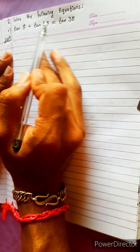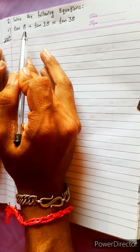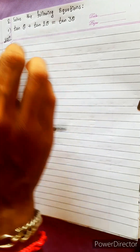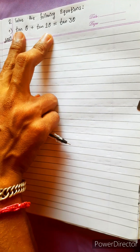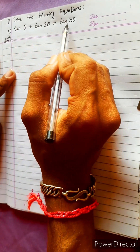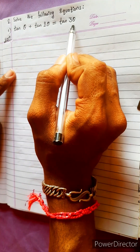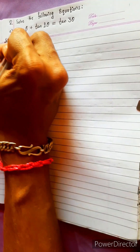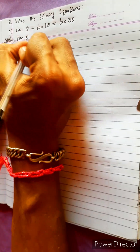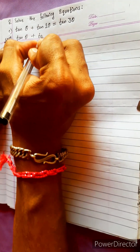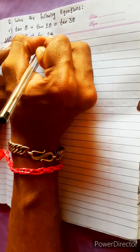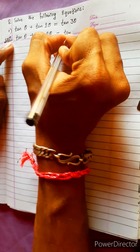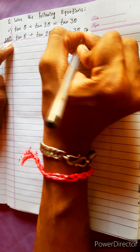Solve the following trigonometric equation. We can solve this by any method — either use the tan(a+b) formula, break it down, or bring everything to one side. So let's bring it to one side: tan θ + tan 2θ - tan 3θ = 0.